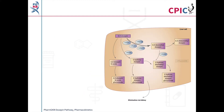This is the PharmGKB doxepine pharmacokinetics pathway. A link to this pathway is provided in the description below this video. This video will first focus on metabolism of doxepine by CYP2C19, followed by metabolism of doxepine by CYP2D6.